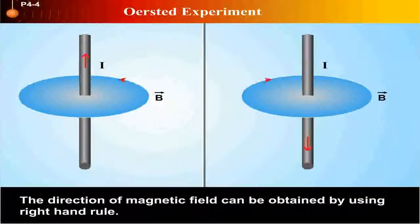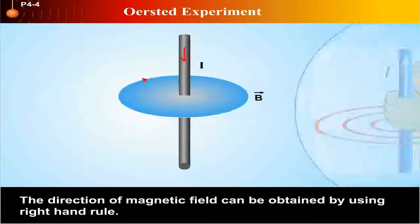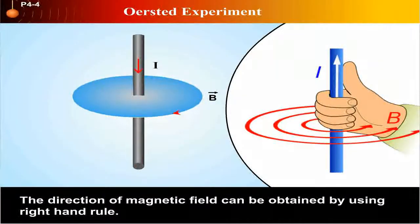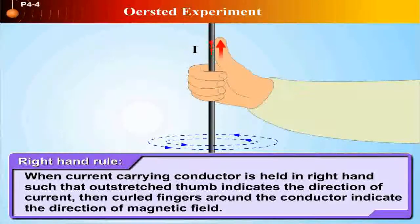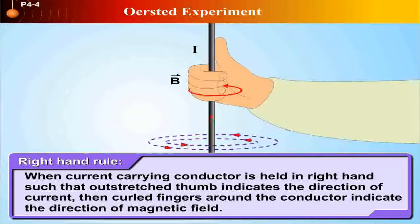The direction of magnetic field can be obtained by using right-hand rule. Right-hand rule states that when current carrying conductor is held in right hand such that outstretched thumb indicates the direction of current, then curled fingers around the conductor indicate the direction of magnetic field.